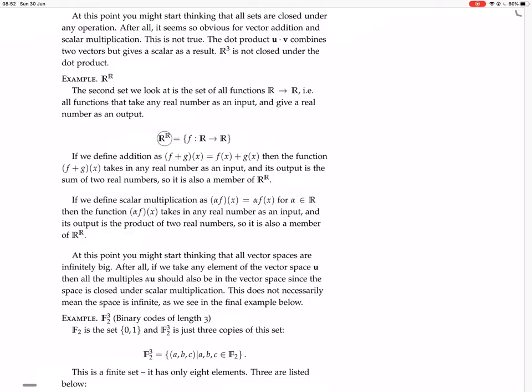You write that as R^R equals f, all those f's from R to R. Then we need an addition and multiplication to make it a vector space. If we define addition as (f + g)(x) = f(x) + g(x), then the function (f + g)(x) takes in any real number as input and its output is a sum of two real numbers, so it is also a member of R^R.